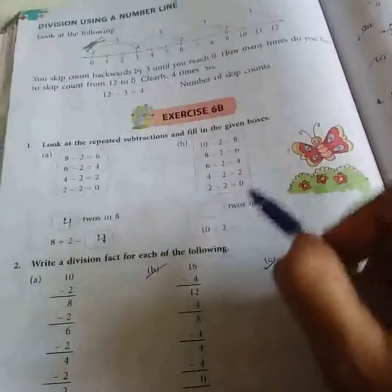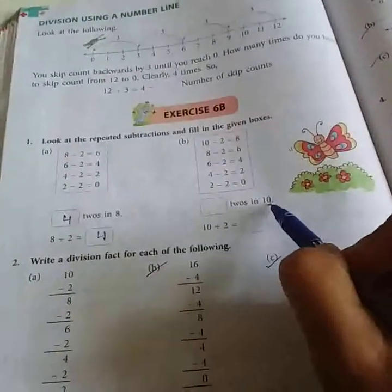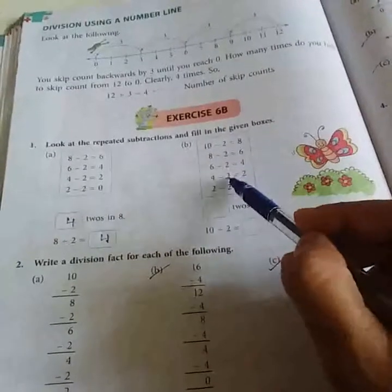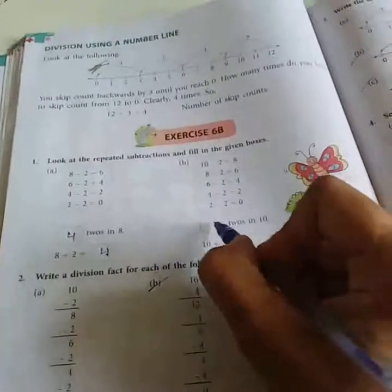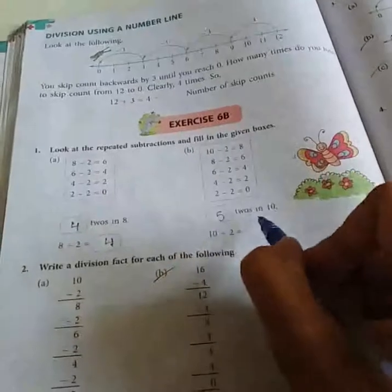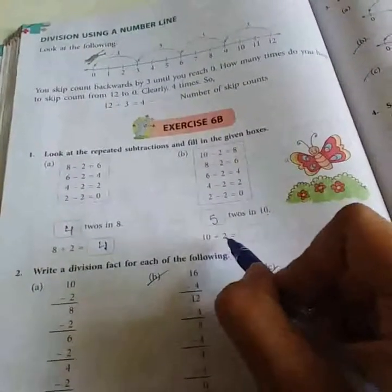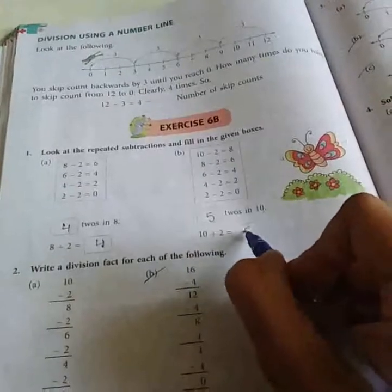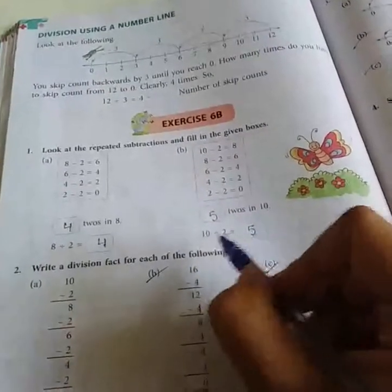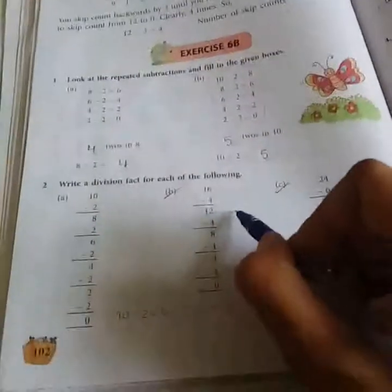Now, how many 2's are there in 10? See here, 1, 2, 3, 4, 5. That means 5 2's are there in 10. So, when you will divide 10 and 2, you will get 5. 2, 5's are 10. In the same manner, you have to write down the division sentence in question number 2.